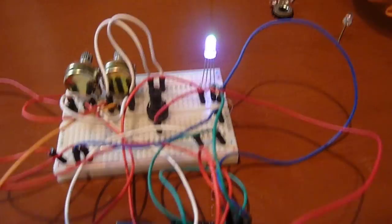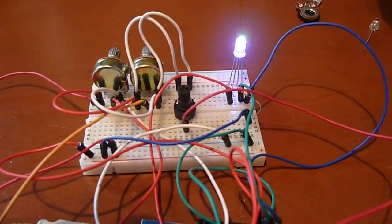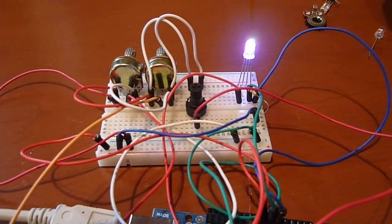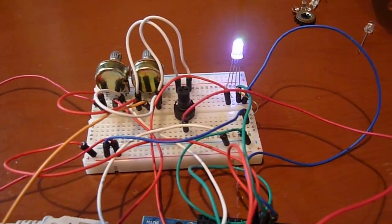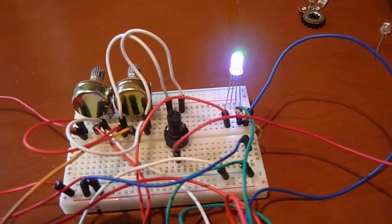This particular unit happens to be a common anode, which means the positive is the common pin, and we are outputting a negative signal to the three color pins.